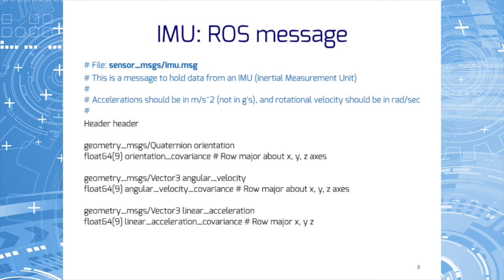Note also the covariance matrices for angular velocity and linear acceleration. The diagonals of the matrices give the variance of each measurement. The variance quantifies how reliable the measurement is or how noise-susceptible the sensor is. This is important to know for the algorithms that use this data.